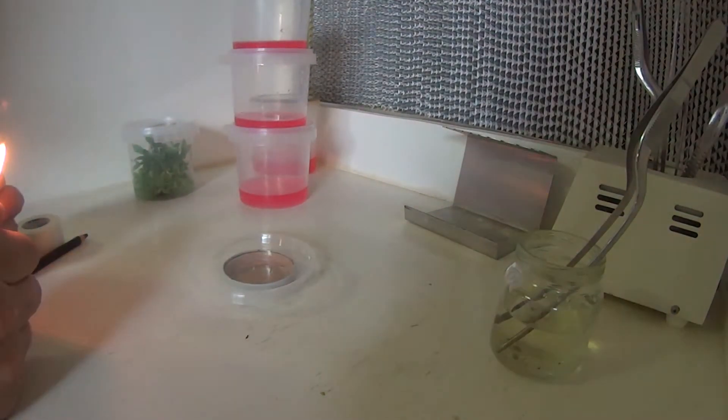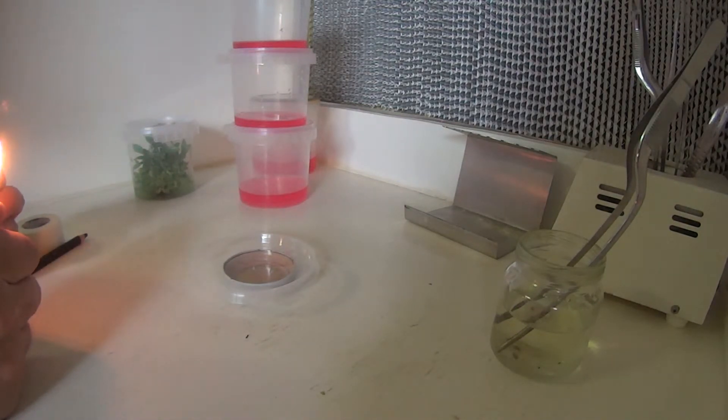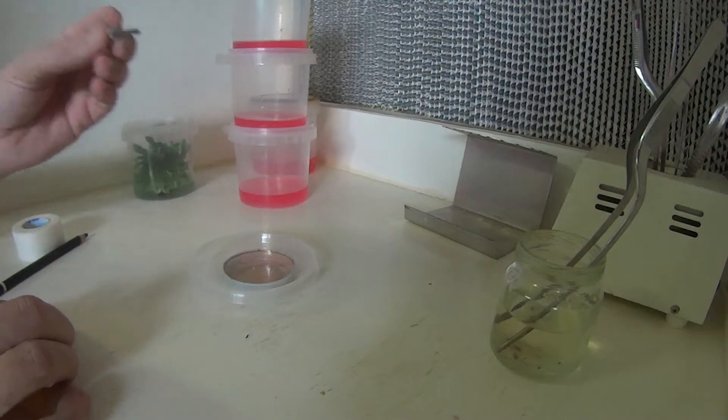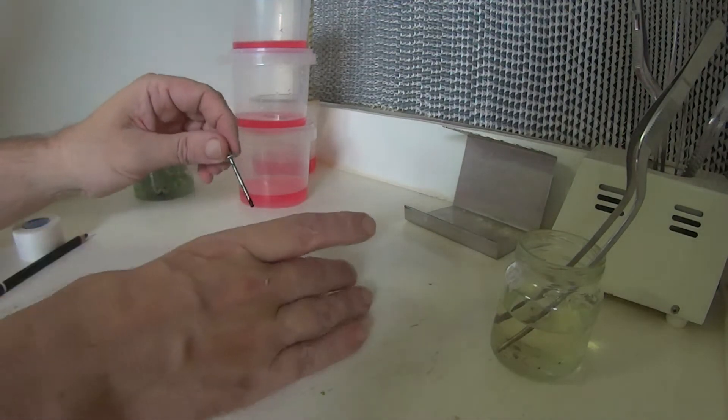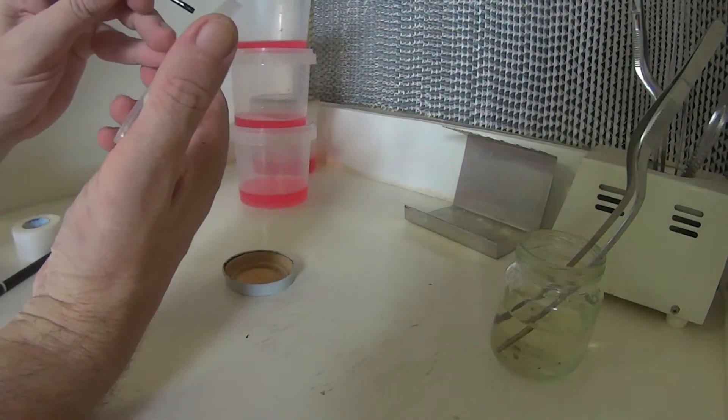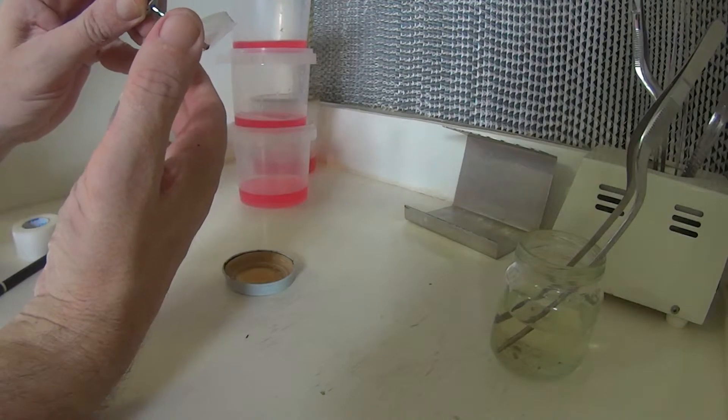Alright, this is what I was talking about before with the vent spots that I make in my containers. What I do for these thinner lids is heat up, in this case a pot rivet, and simply melt a hole through the lid.